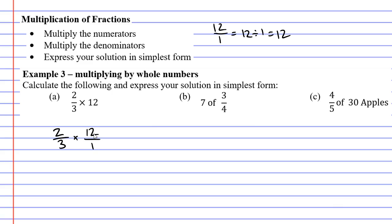In fact when we look at question B that's going to be 7 over 1, and the 30 apples is going to be 30 over 1. So let's work on question A here.